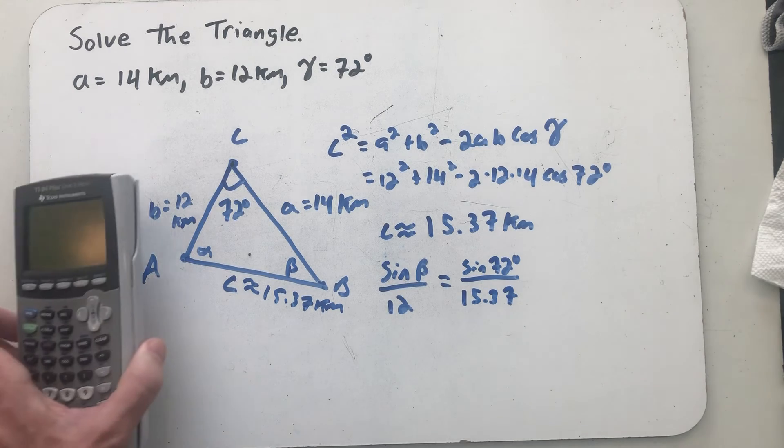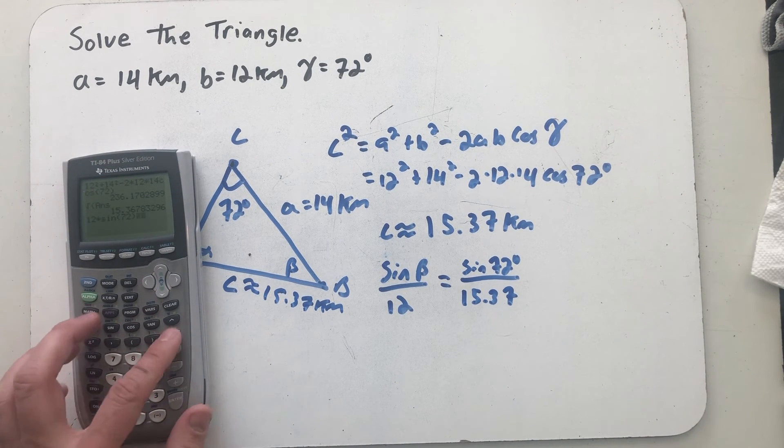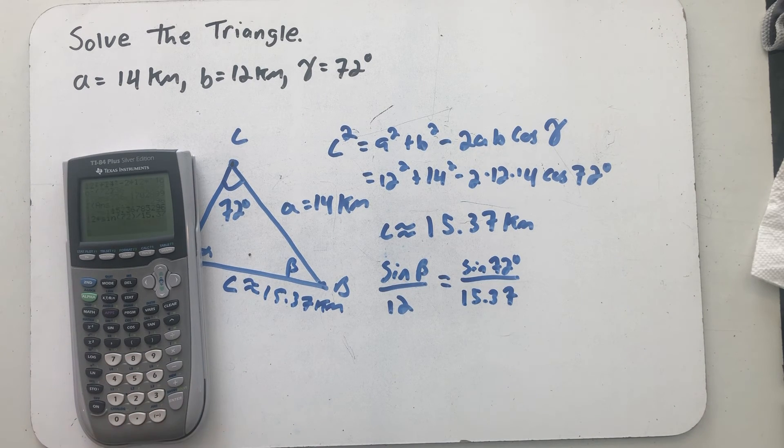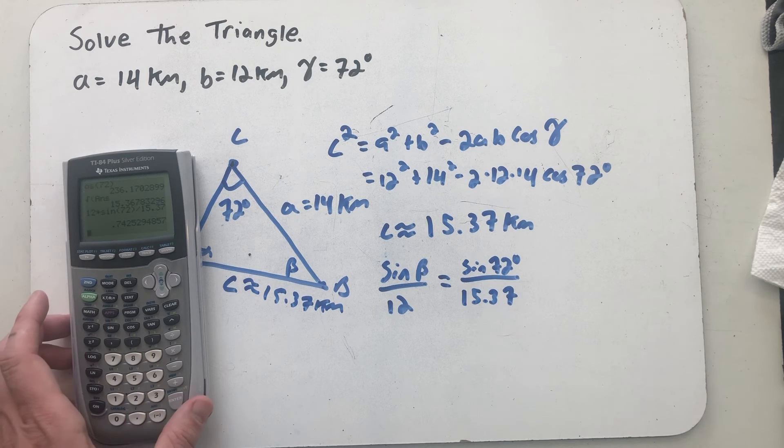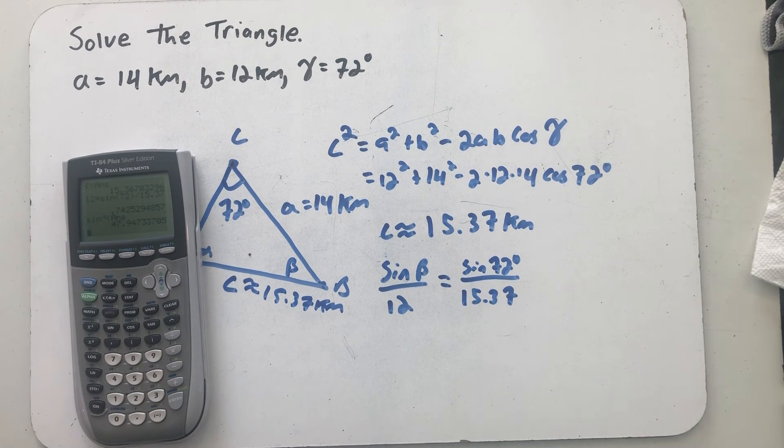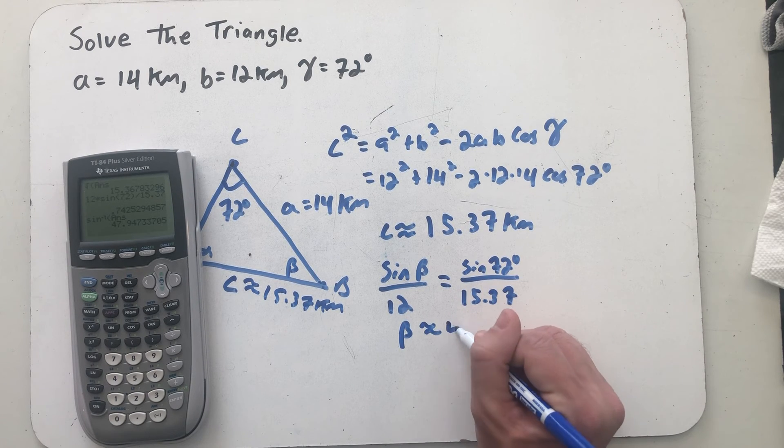Imagine multiplying both sides by 12. I'm dividing by 15.37 after I have that sine of 72 in there. There is the sine of beta, which tells me my angle had to be about 47.9 degrees.